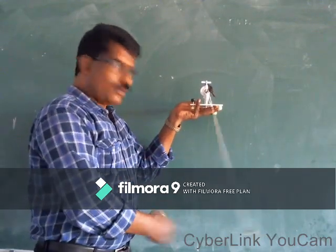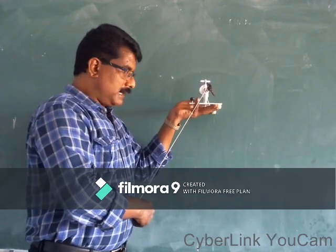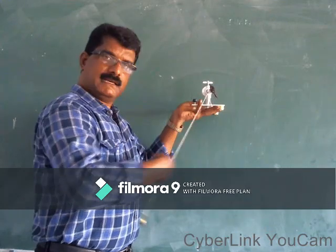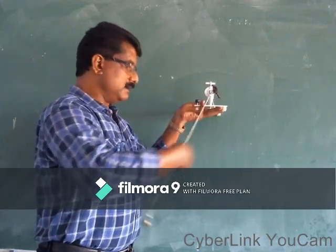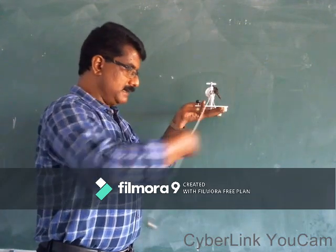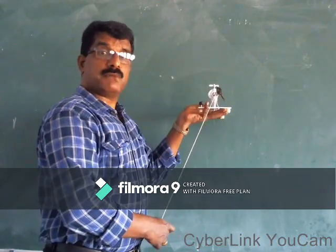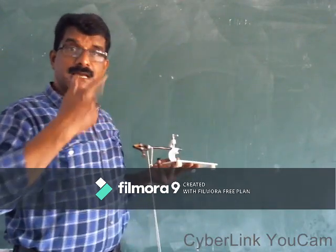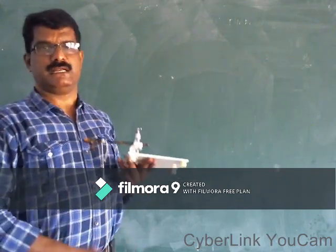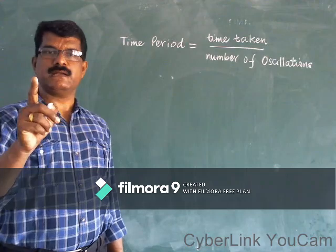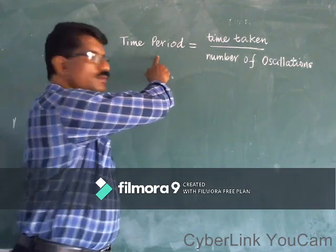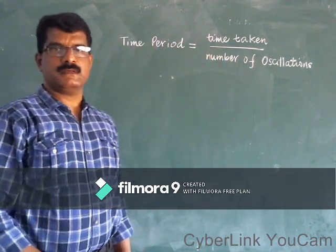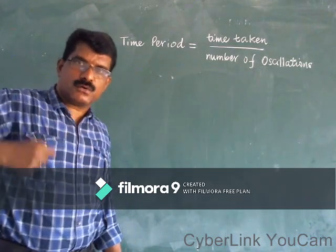Time period: what is time period? Time taken to complete one oscillation. Once the oscillation starts, count: one, two, three, four, five, six, seven, eight — take the number of oscillations and the time, then divide that time by the number of oscillations to get the time period. Time period equals time taken divided by number of oscillations. Start the stopwatch once the oscillation begins.